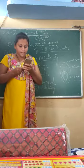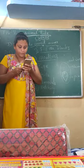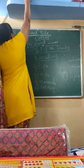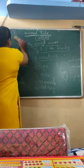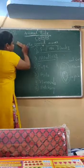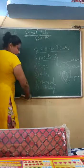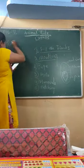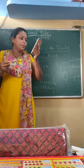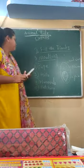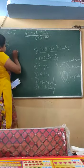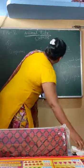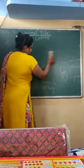Now we move to the fourth section, where we again have question answers. The first question is: differentiate between oviparous and viviparous animals.